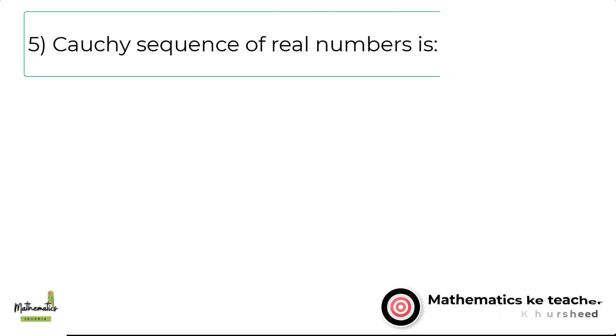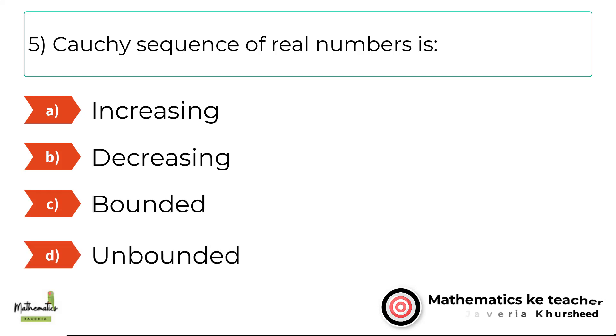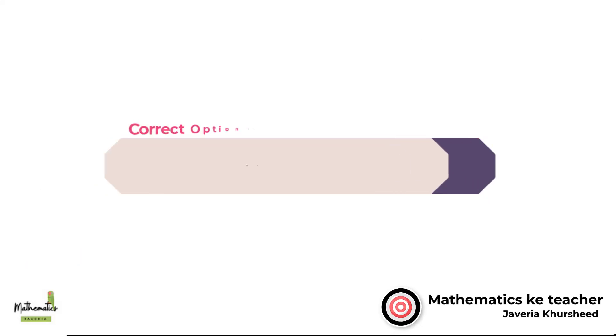Number 5. Cauchy sequence of real numbers is: A. Increasing. B. Decreasing. C. Bounded. D. Unbounded. The correct option is C. Bounded.